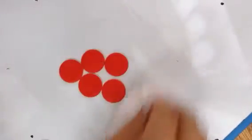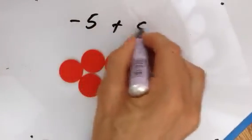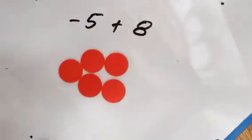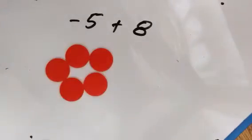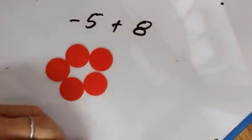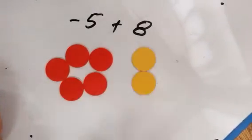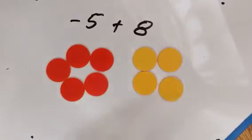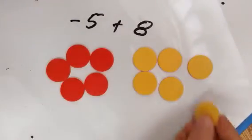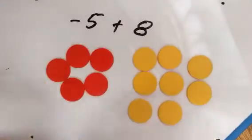Let's do another one. How about if we have negative five plus eight? So I have my negative five represented here. Two, four, six, eight.